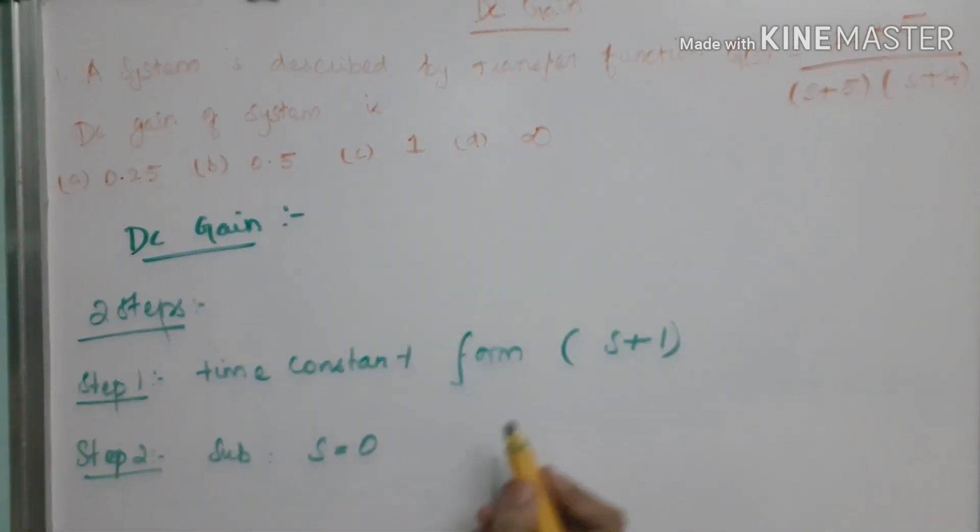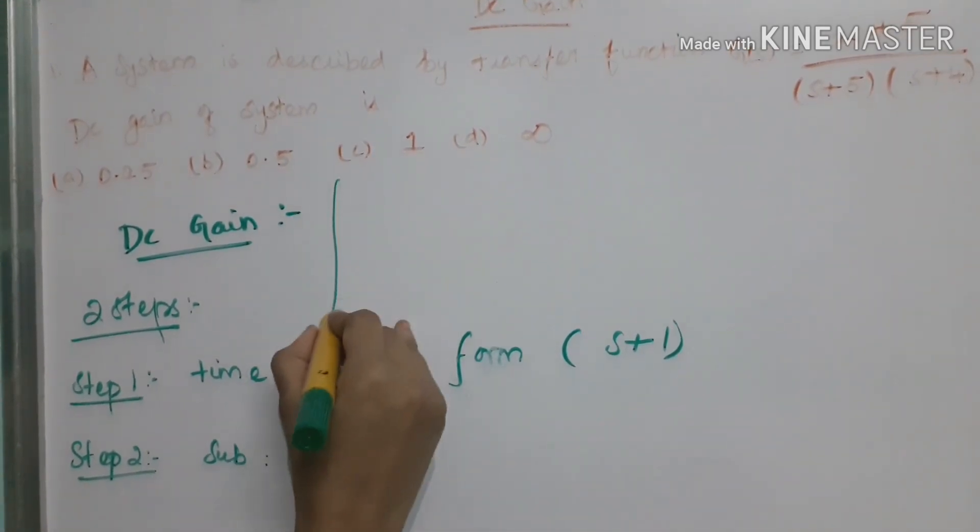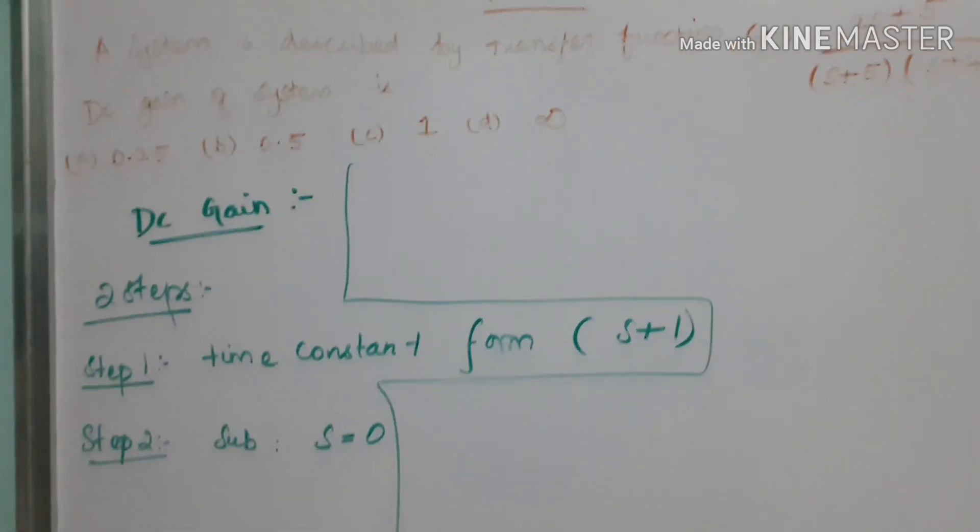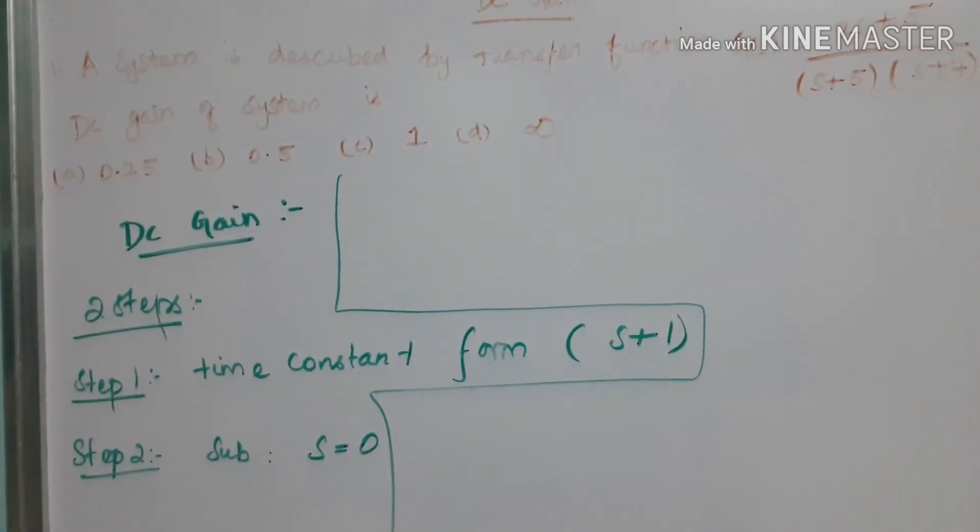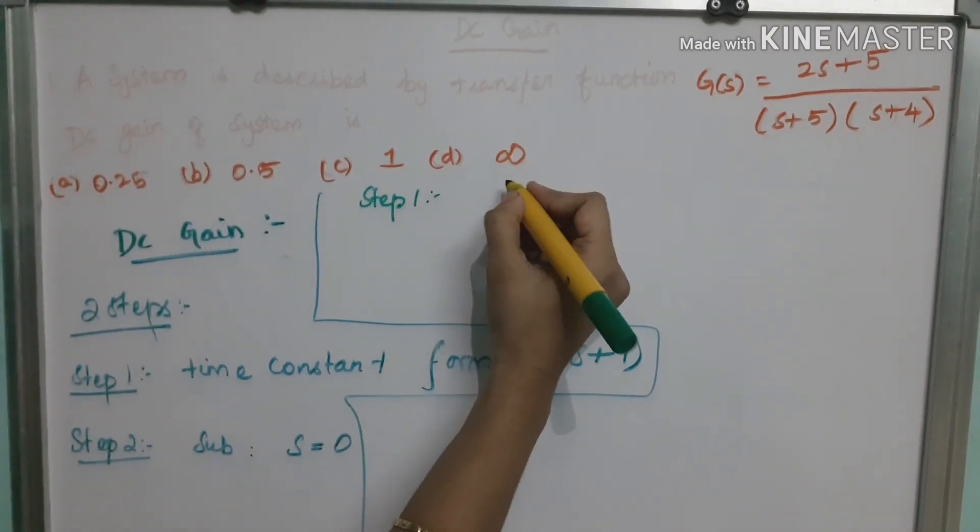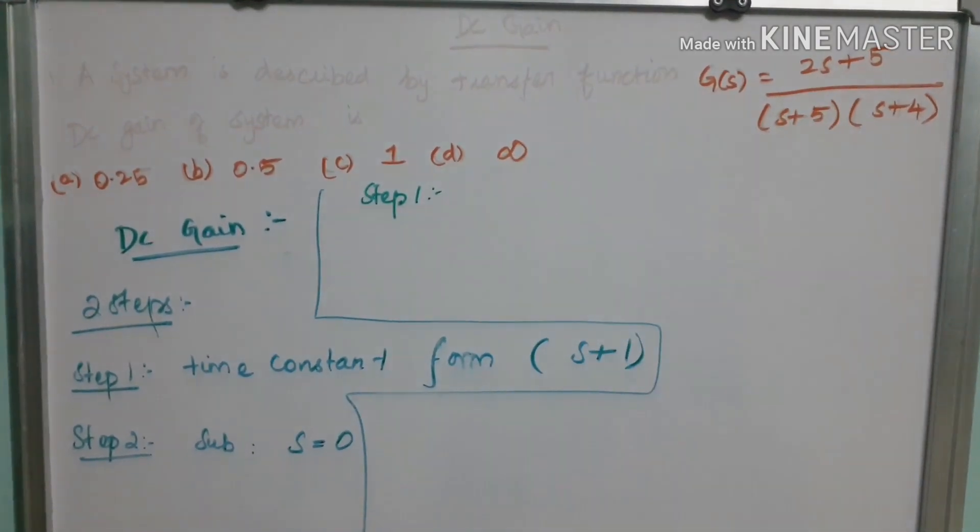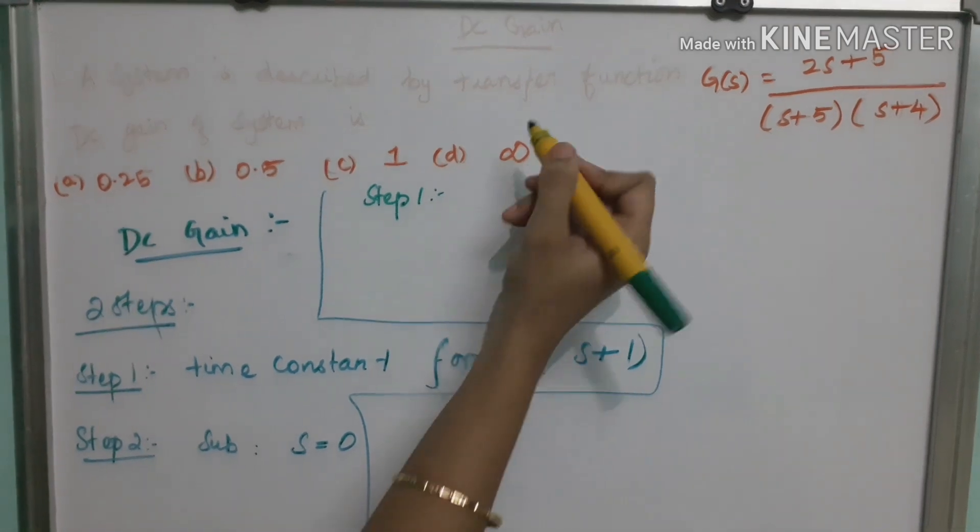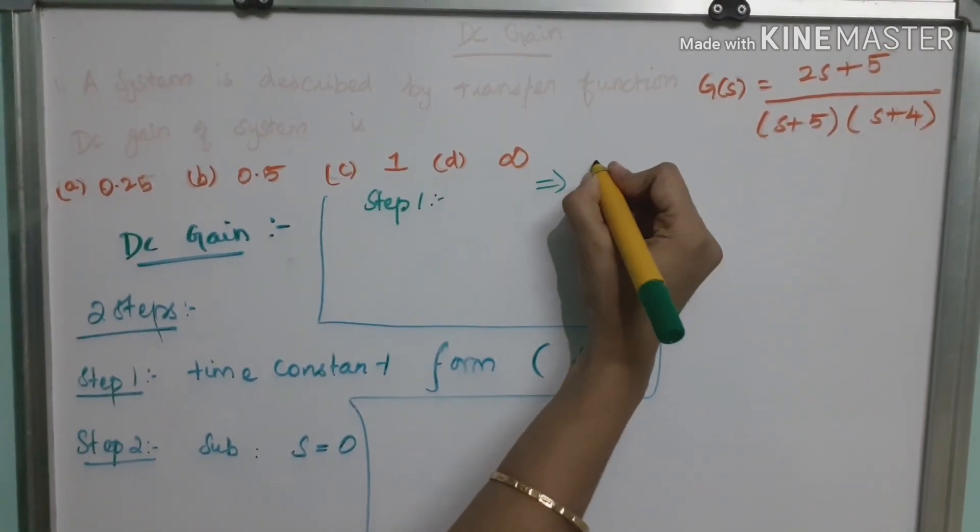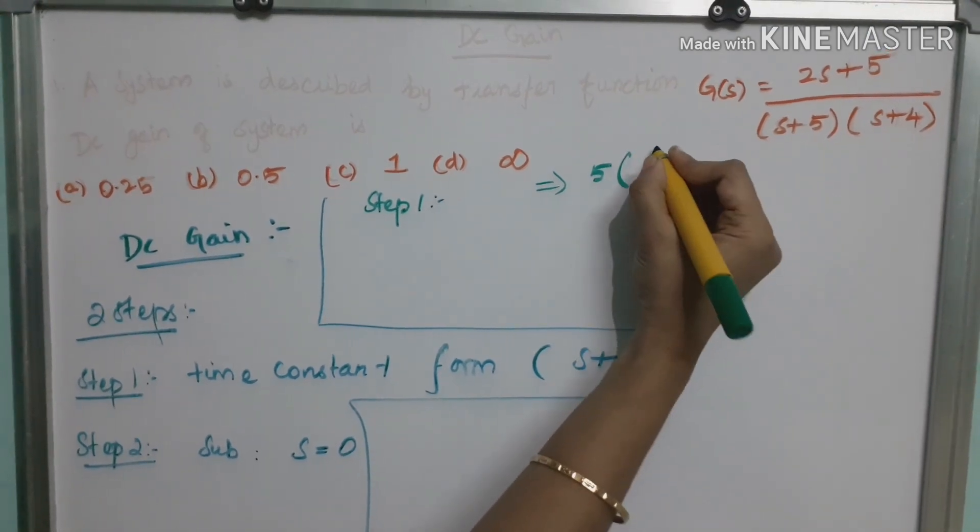Step 1, first finding. Invert this transfer function into time constant form. So, make the numerator into s plus 1 form.